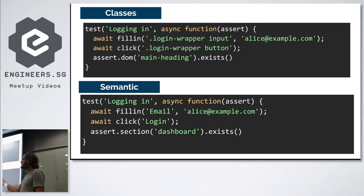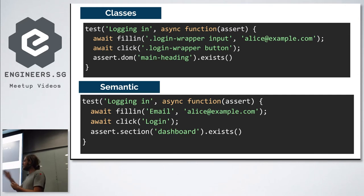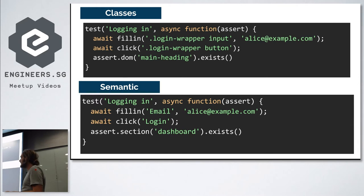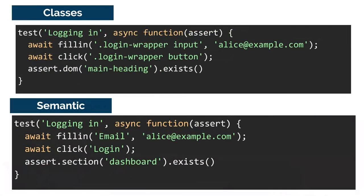This approach breaks when you change the CSS, and as you scale, someone completely unfamiliar with the code has to read the test and won't understand it. The idea is to change that to English so it reads like a story — BDD style. You go: fill in 'email' with 'alice@example.com,' click the 'login' button, and assert the section.